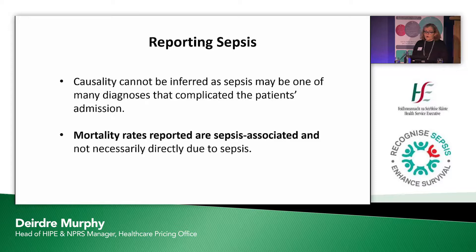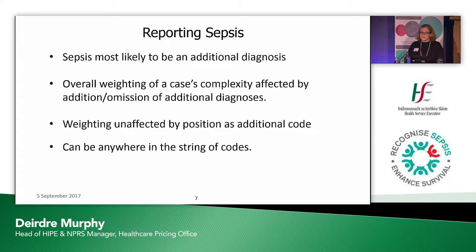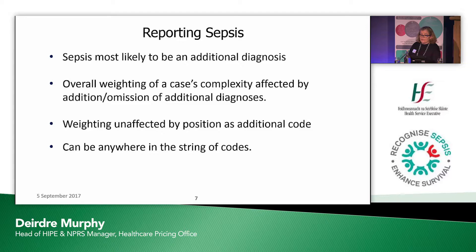Very importantly, causality cannot be inferred, as sepsis may be one of many diagnoses that complicated the patient's admission. Mortality rates that are reported are sepsis-associated and not necessarily directly due to sepsis. Sepsis is most likely going to be an additional diagnosis in the Hype data. The overall weighting of a case's complexity is affected by the addition of those additional diagnoses. It is very important that complicating comorbidities are recorded in the chart documentation so that the coder can pick those up. The weighting is unaffected by the position as an additional code — as long as it is present, it is available to be reported as a complicating comorbidity.